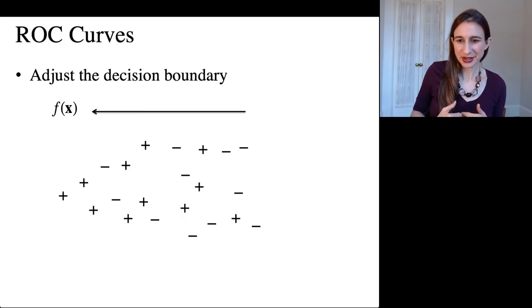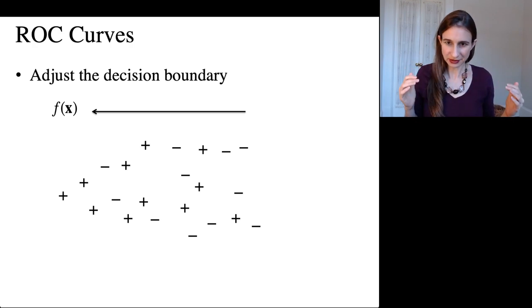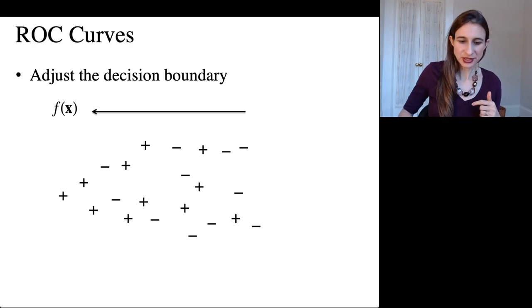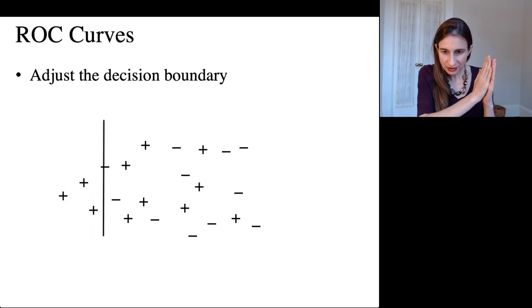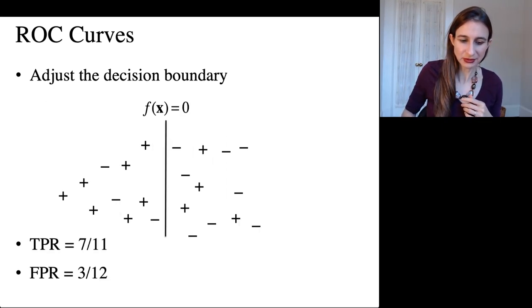So let's go over ROC curves and just give a different perspective on how to construct them. We would take our model and run the decision boundary along the full range and get the true positive rates and false positive rates along the full range.